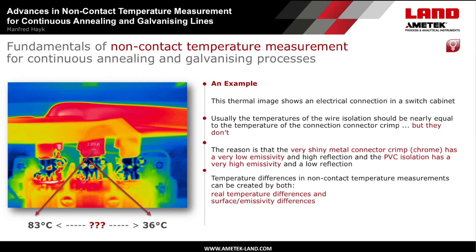To make it more graphic, you can see a thermal image of some electrical connections taken with a thermal imager, showing different temperatures by different image colors. Looking at two marked temperature points, you can see different temperatures of 36 and 83 degrees Celsius — a 47-degree difference. It is quite unlikely that these temperatures differ that much at two measuring points directly beside each other. The reason is that the metal connector clamp has a very shiny metal surface with low emissivity, and the wire insulation has a very high emissivity. Knowing the right object emissivity is essential to get the right temperature reading.